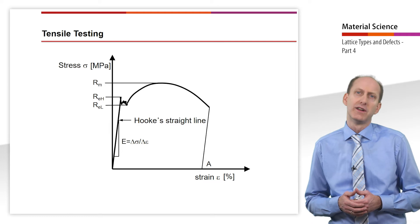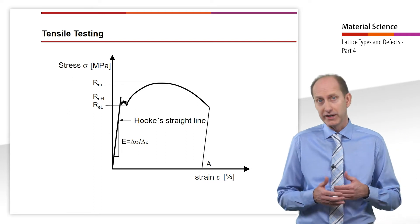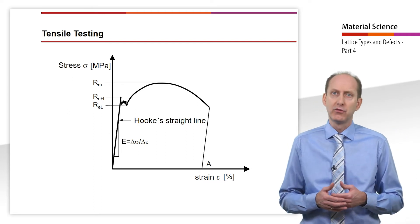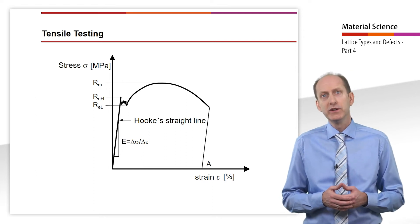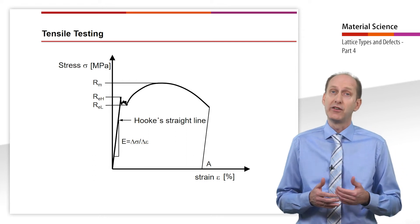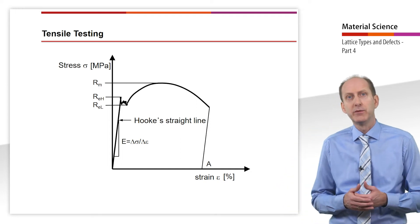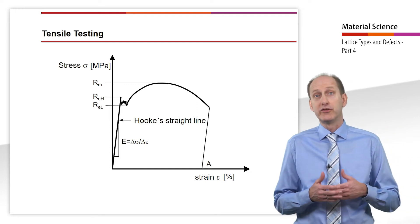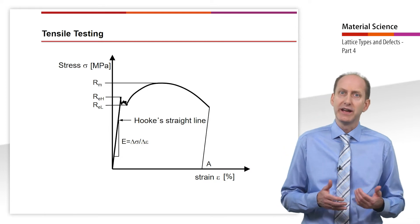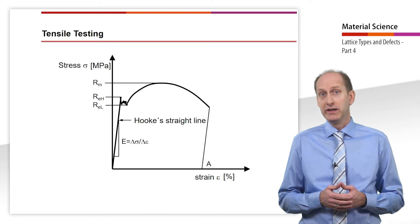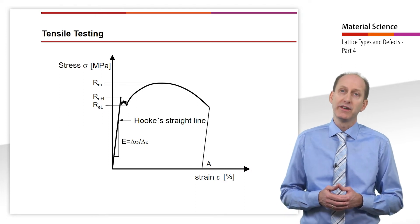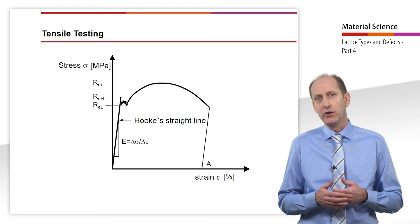The maximum force Fm shown in the stress-strain diagram divided by the original cross-section of the sample S0 equals the tensile strength Rm. If we take a look at the behavior of the stress in the stress-strain diagram, we will recognize point REH as the upper yield strength and point REL as the lower yield strength.